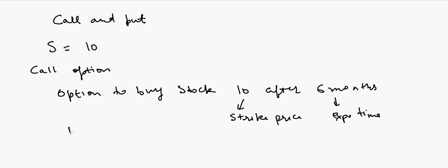To buy this option you have to pay some money — suppose the price of the call is $1. This option doesn't force you to buy at $10. If the stock price is lower in the future, you don't want to use this option — why would you buy at $10 when it's available for $5? However if it goes to $15, you'd buy it for $10 and sell immediately at $15, getting $5 profit. This is what we call a call option.